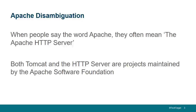Both Tomcat and the Apache HTTP server are projects managed by the Apache Software Foundation. Technically, Tomcat is Apache Tomcat, and the HTTP server, which we sometimes refer to as Apache, is the Apache HTTP server. The confusion stems from the fact that the Apache HTTP server was the very first Apache project, and there was a time when the only Apache project was the Apache HTTP server.